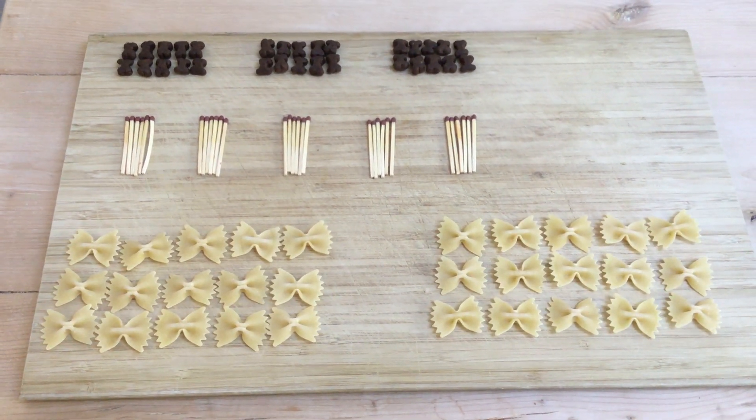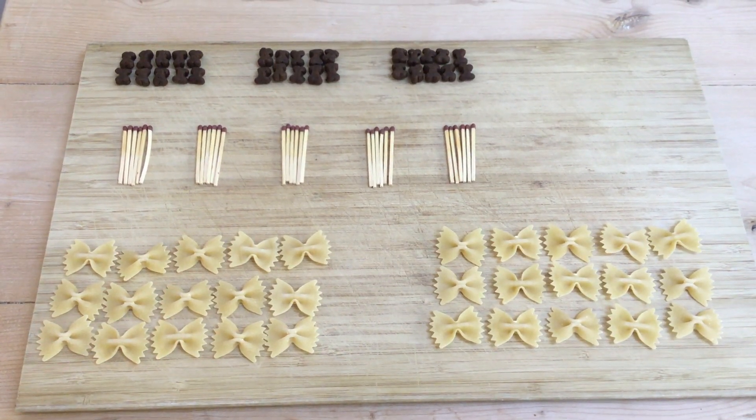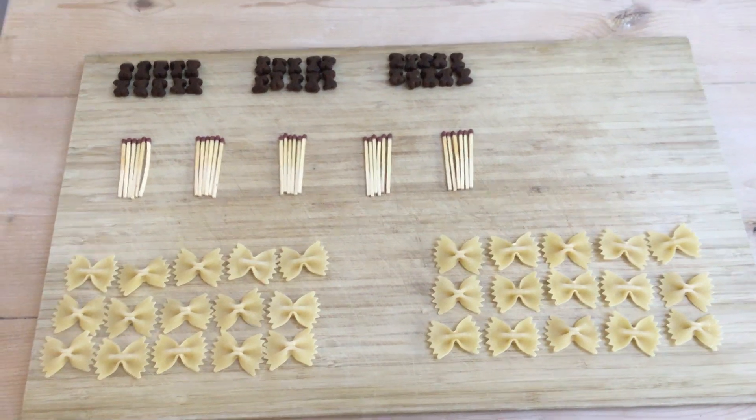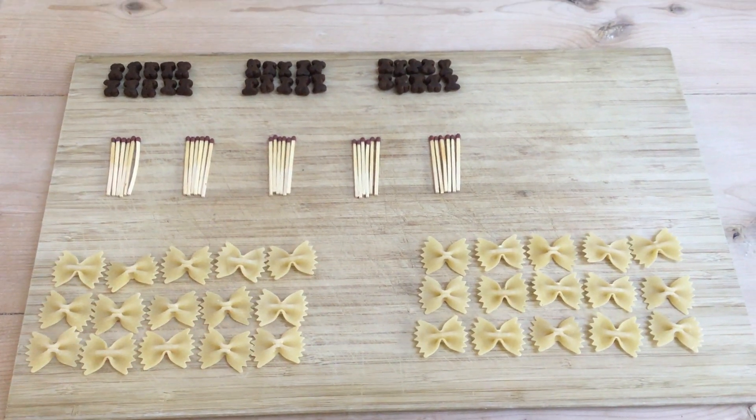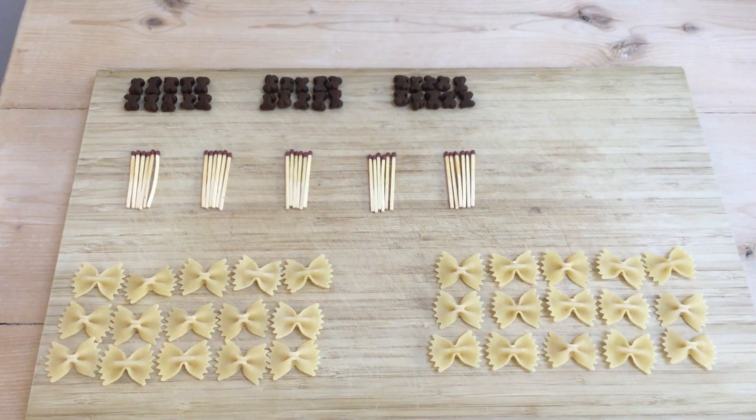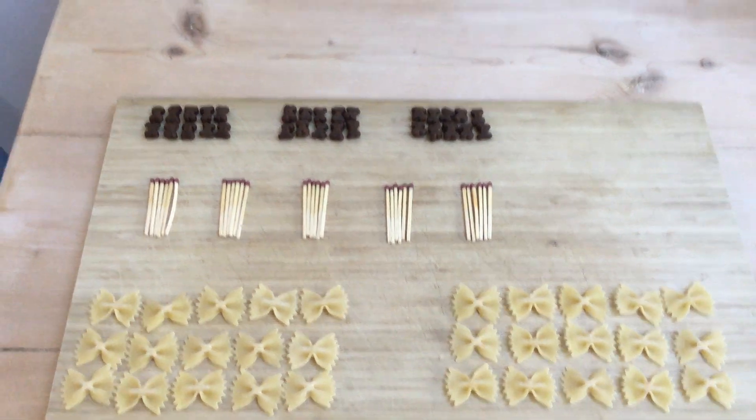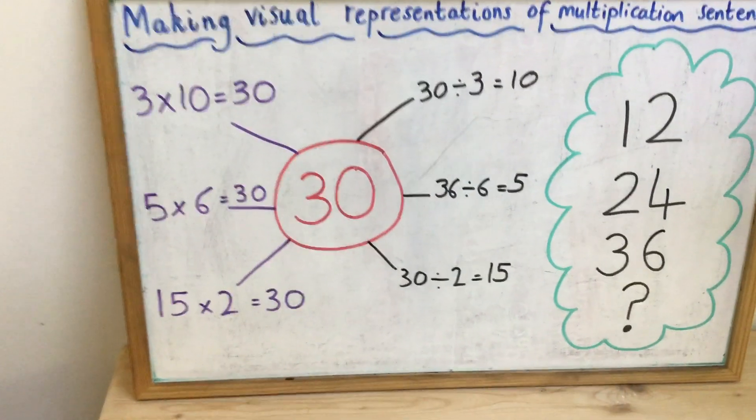So 15 times 2 is 30. Now you can also say that these visual representations also represent division sentences. So the inverse. And I've shown that on my board.